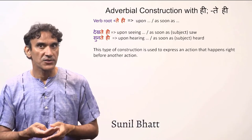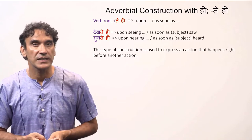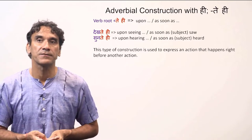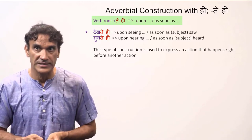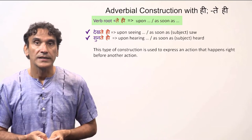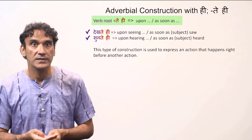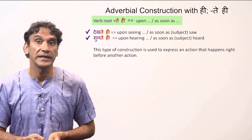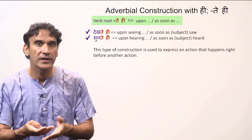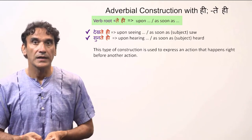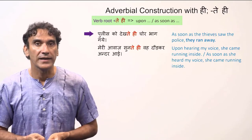The next grammar point is adverbial construction with the particle 'hi' to express an action that happens right before another action. The particle 'hi' is used after the first action. The first verb takes the form verb root plus 'tehi'. For example: dektehi, sunthehi. The English translation of this adverbial phrase would be 'upon' or 'as soon as'. So dektehi would be 'upon seeing' or 'as soon as the subject saw.'